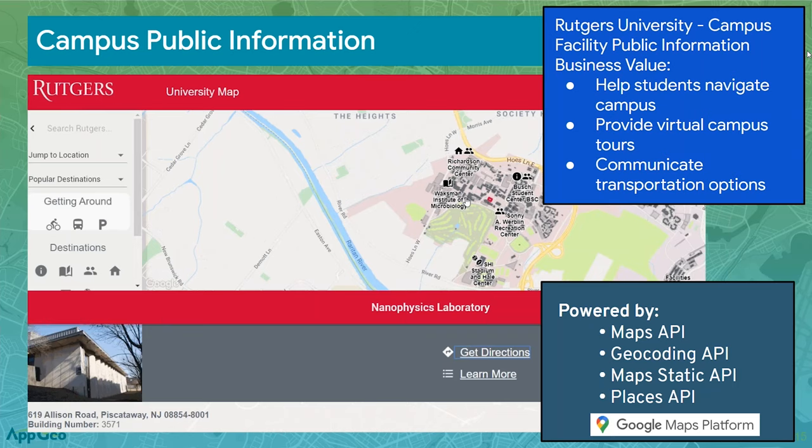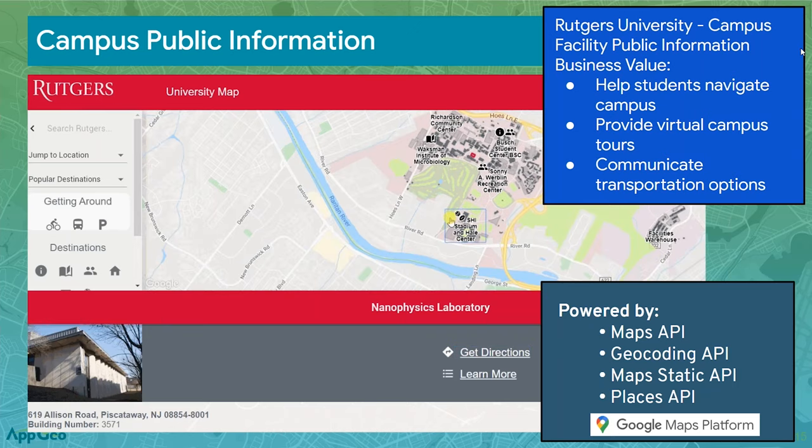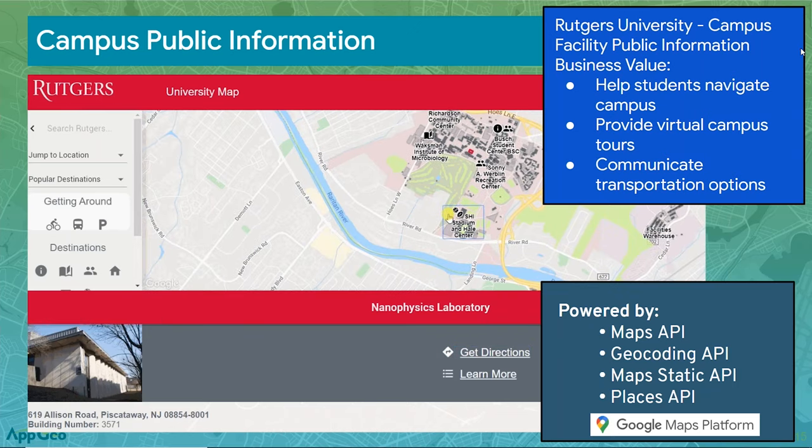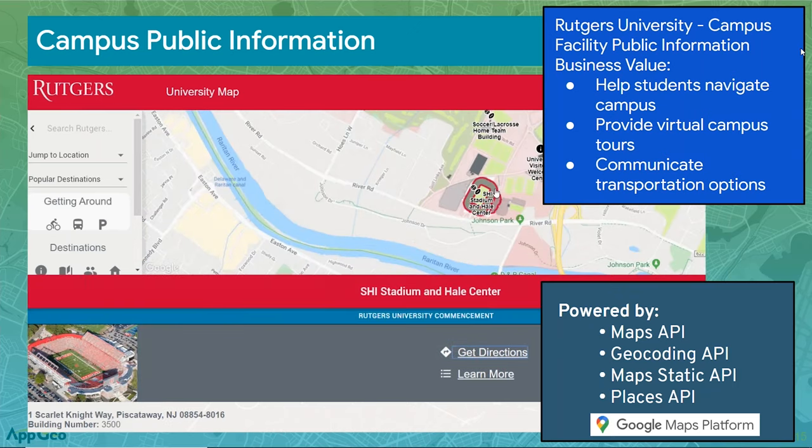The next example is around campus public information. This is a project we did for Rutgers University — a very large university with three campuses, one of the larger university systems in the country. We built a campus public information application on the Google Maps Platform to help students navigate the campus, provide virtual campus tours, and communicate transportation options. We're using four different APIs in this project, and I'd like to ask my colleague Aaron Doucette to give us a live demo.